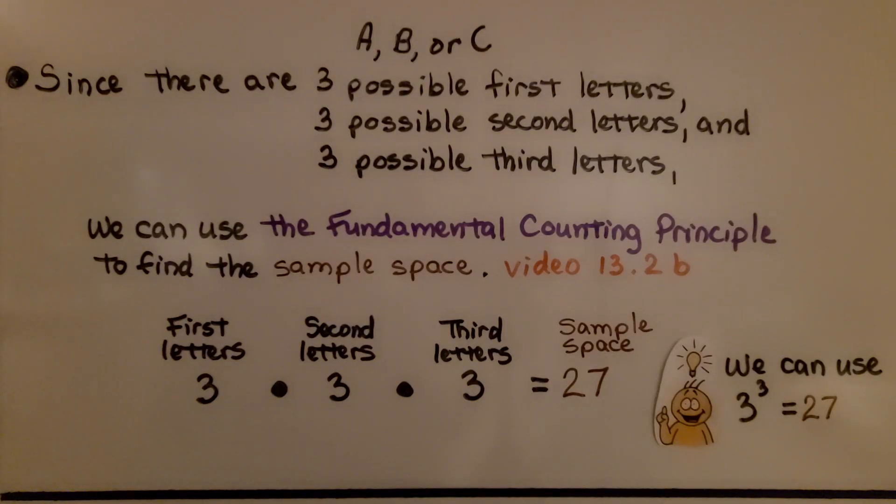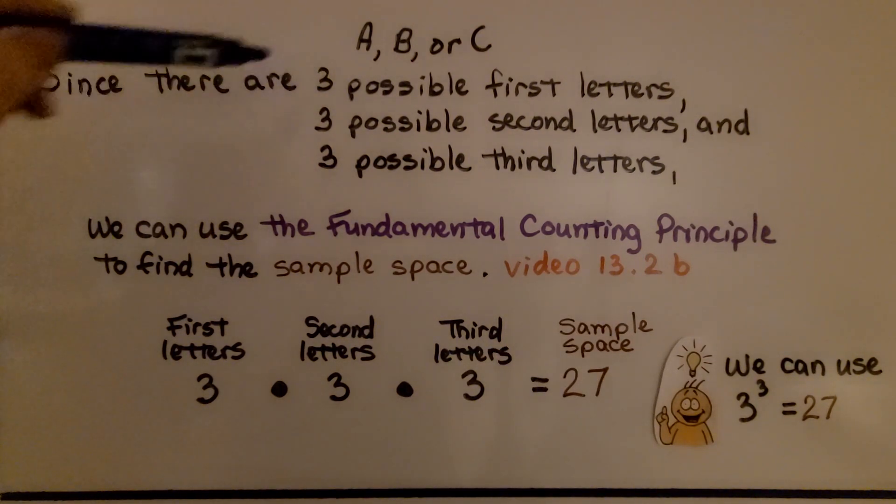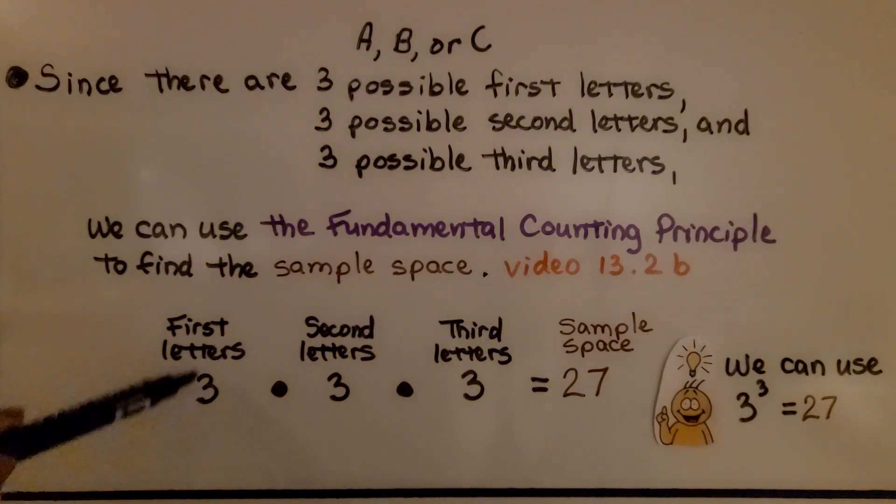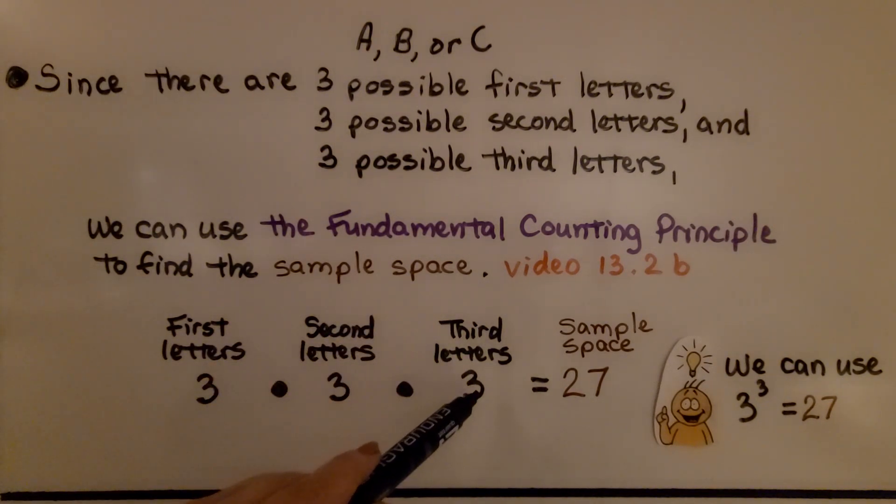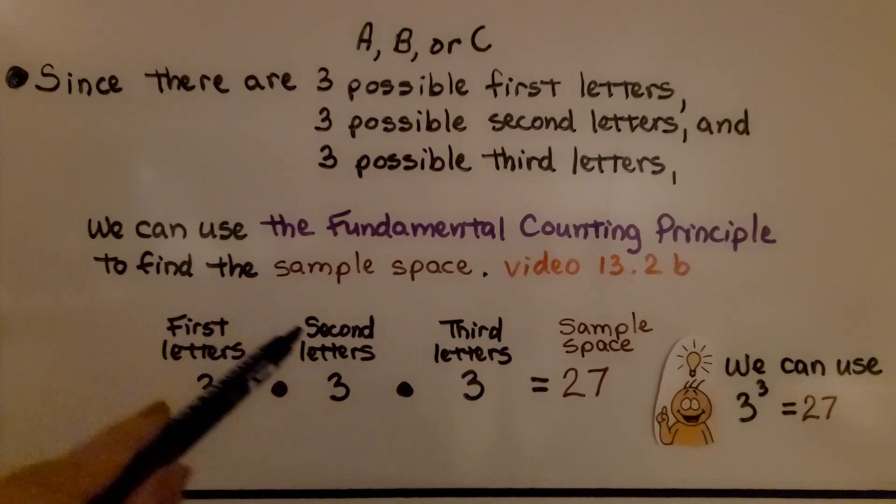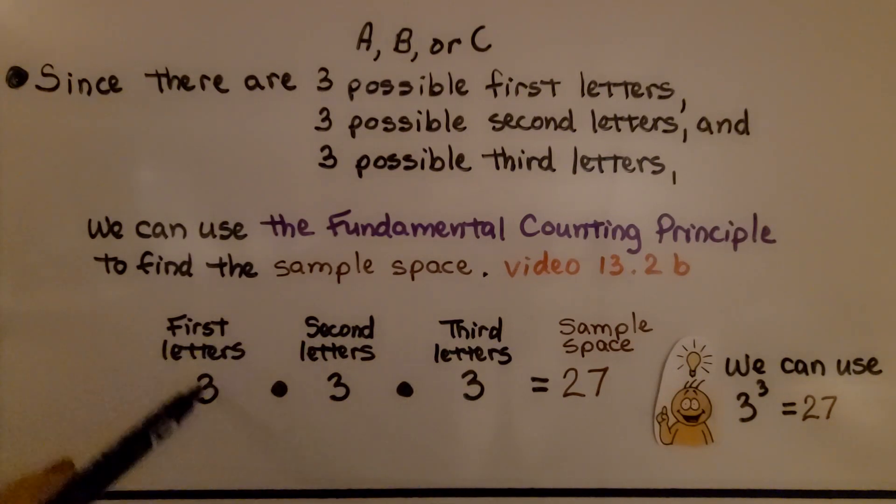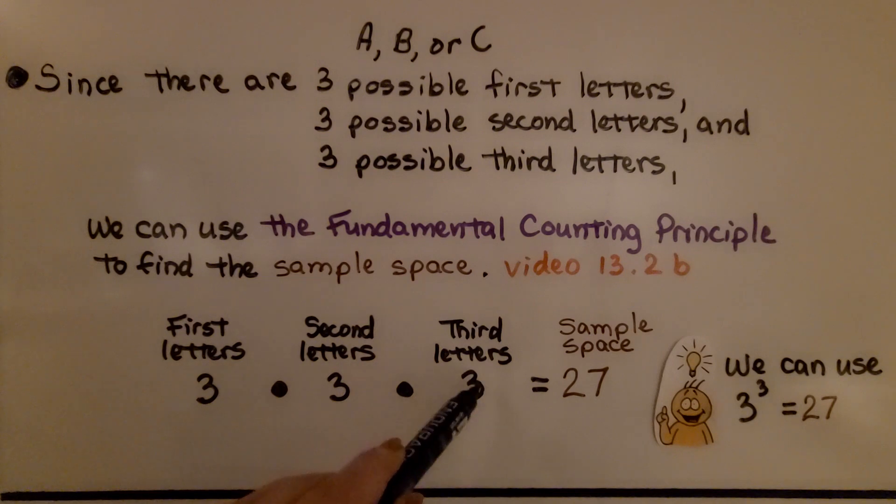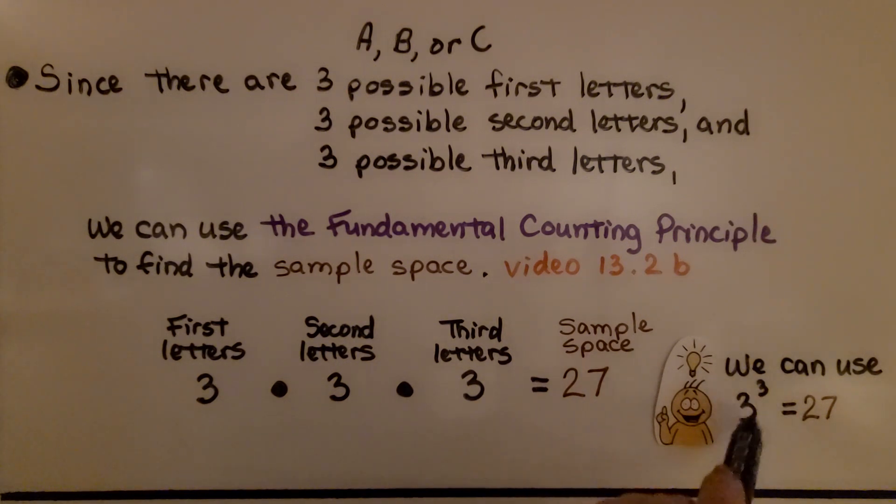We can use the fundamental counting principle to find the sample space. We introduced that in the last lesson. Three possible first letters, three possible second letters, three possible third letters. We multiply three times three times three. Three times three is nine. Nine times three is twenty-seven. That tells us our sample space is twenty-seven. We can also do three cubed, or three to the third power, because we have three threes. We're multiplying three times three times three, and that's equal to twenty-seven.